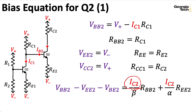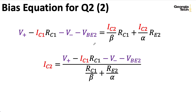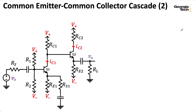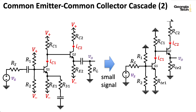Solving for IC2 and plugging in all the various quantities, we wind up with an expression for it. So you find IC1 and then get IC2 from that — I'd refer you to the last lecture for the details. Once you've computed these collector currents, you can use your alpha and beta relations to get your base and emitter currents, and then compute the small signal parameters for each transistor. So we have the raw input and output resistances of the transistors, the raw emitter resistances, and the raw transconductance gains.